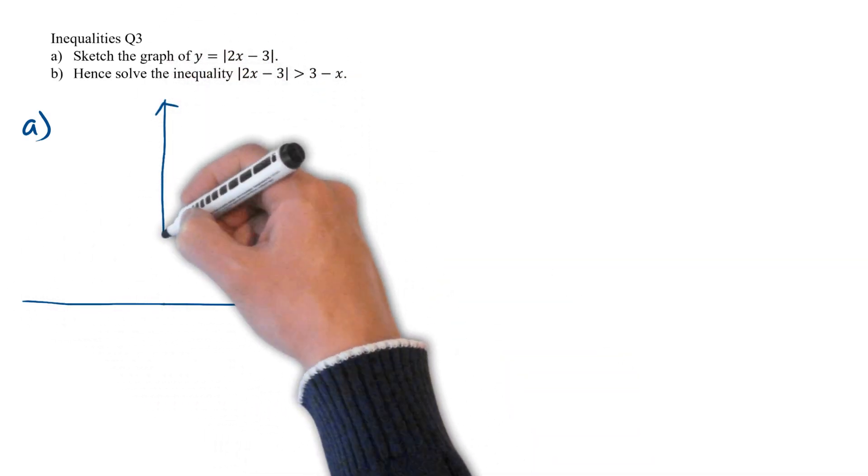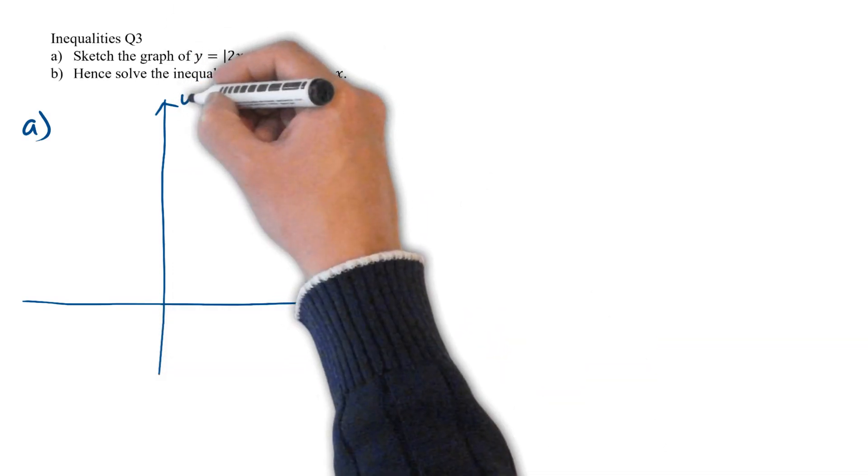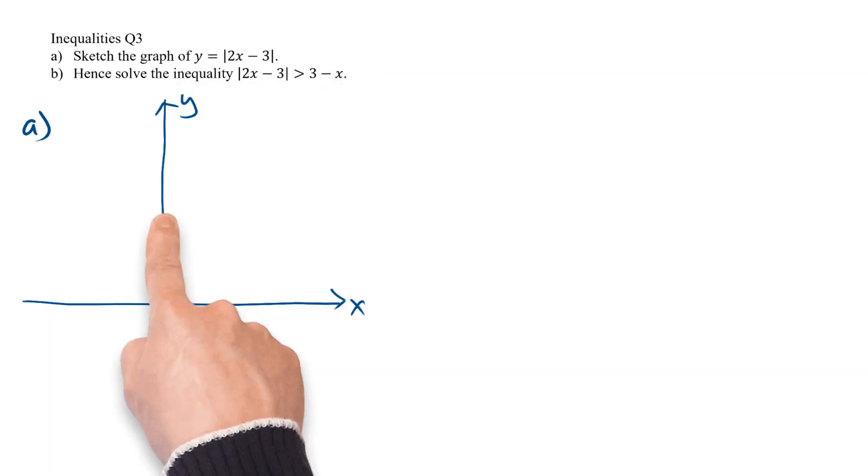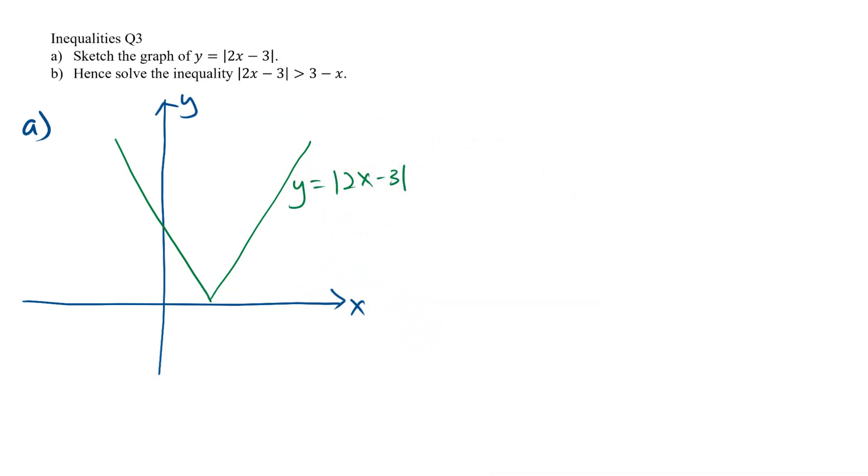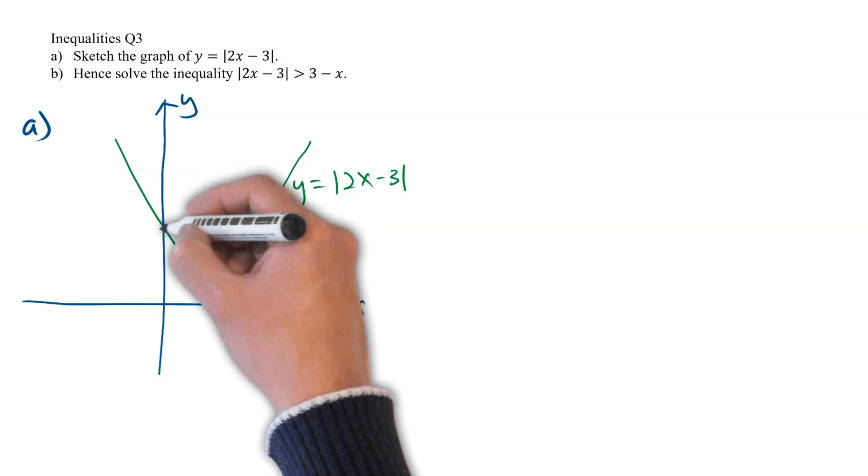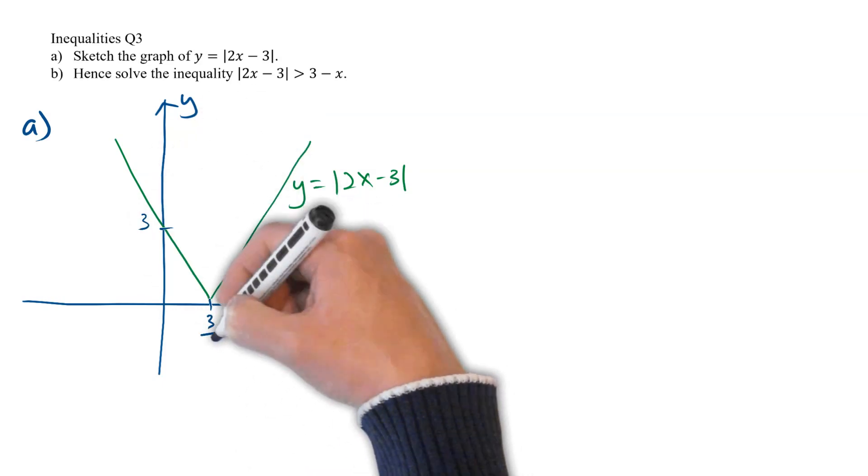We have the x-axis and the y-axis, and with that, we can draw our modulus graph to look like this. Remember to label the x and y-intercepts, which are at 0, 3 on the y-axis, and 3 over 2, 0 on the x-axis.